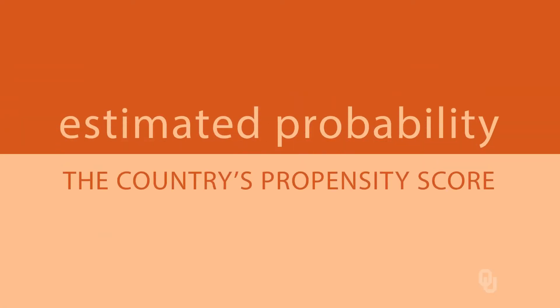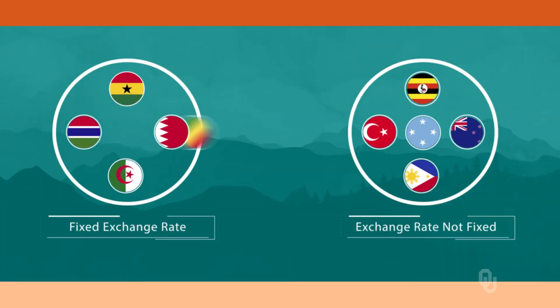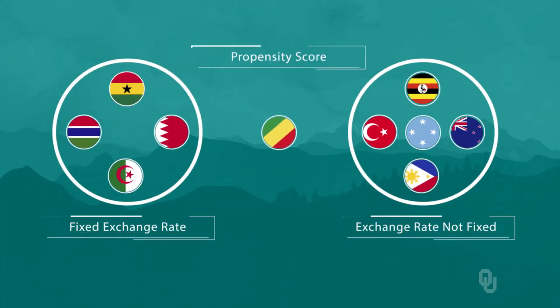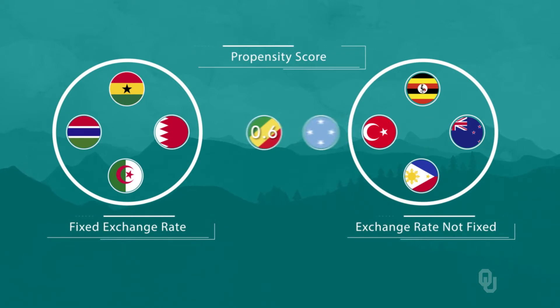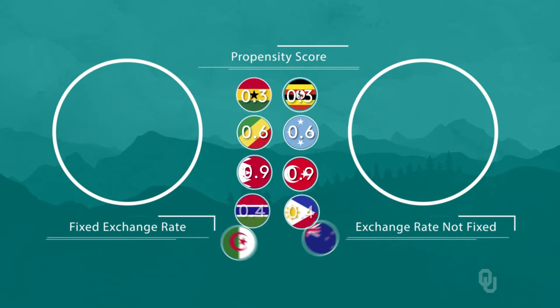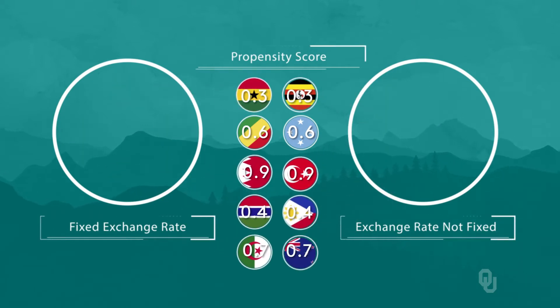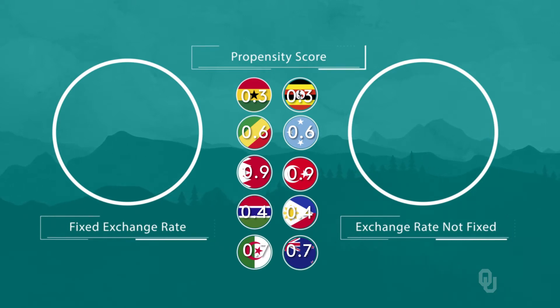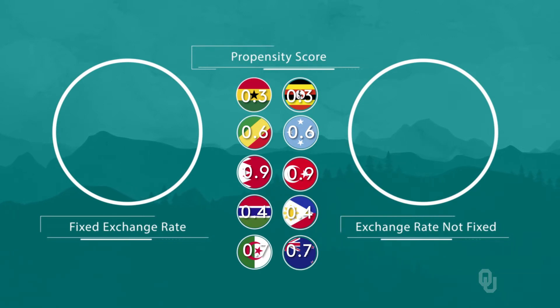Since we might have a very large number of categories, which makes matching complicated, we often estimate a first-stage equation that gives us the probability a country adopts a fixed exchange rate. We call that estimated probability the country's propensity score. Suppose one of the fixed rate countries had a propensity score of 0.6 — we would then look to match it to a non-fixed rate country that also had a 0.6 propensity score. Once each of the treated countries are matched to a non-treated country with a similar propensity score, we compare the average inflation rate in the treated countries to the average inflation rate in the matched non-treated countries, and that would be our measure of the effect of the treatment on inflation.